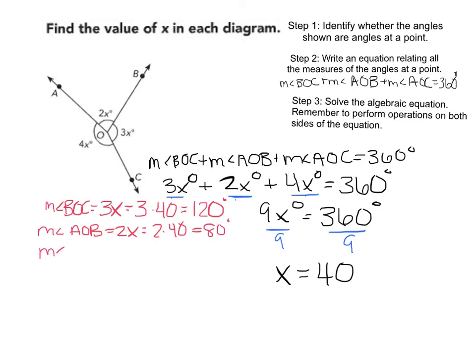And then measure of angle AOC equals 4x. 4 times 40 equals 160 degrees. So now we can check 120 degrees plus 80 degrees plus 160 degrees equals 360 degrees. So we have a correct value. And so I want to say to you, thank you.